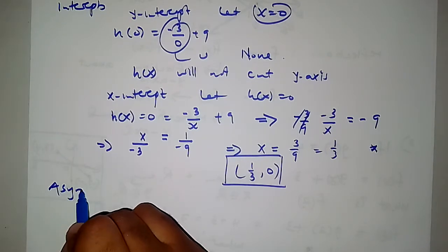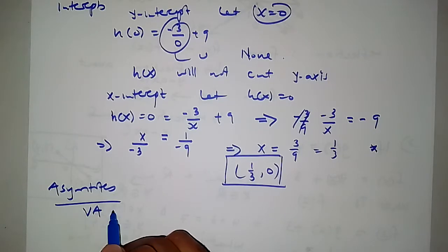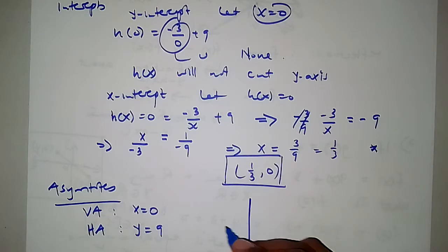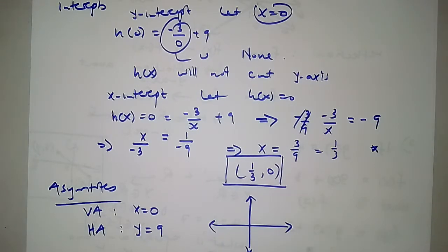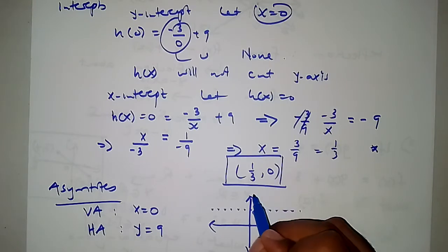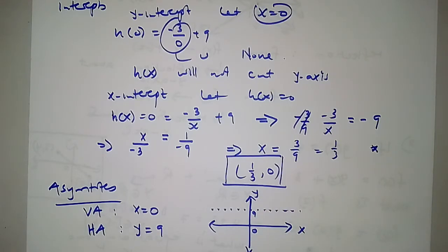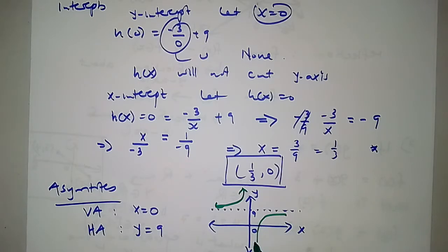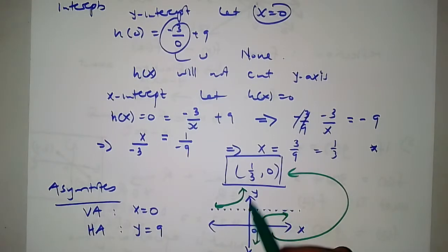For the asymptotes: the vertical asymptote is x equals 0, which is the y-axis. The horizontal asymptote is y equals 9. So now we sketch: drawing the axes, marking the horizontal asymptote at y equals 9. Our function is in the second and fourth quadrants relative to the asymptotes. The x-intercept is at 1 over 3. The function does not cut the y-axis.